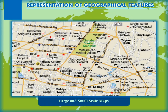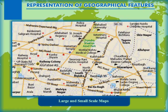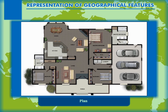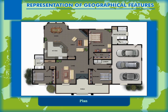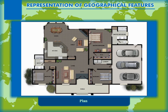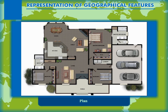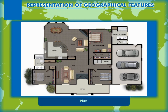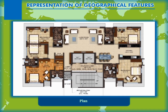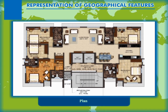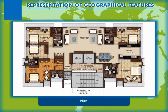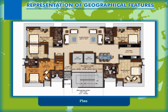Such maps are called large scale maps. Other than a map and a sketch, there is another large scale representation of an extremely small area, like a house or a school. Such drawings are represented according to a scale and show very minor details — these are called plans.